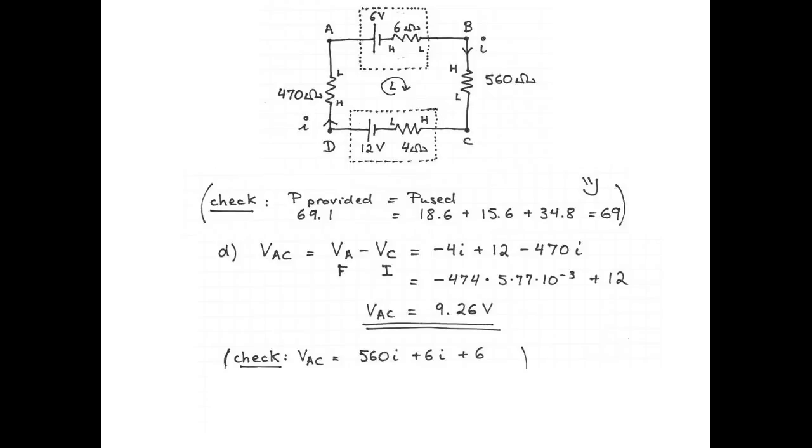Let's calculate the potential from C to A, but this time going through point B. Across the 560 ohm resistor, we go from low potential to high potential, so plus 560i, and then plus 6i across the internal resistance of the 6 volt battery, and plus 6 across the EMF of the 6 volt battery. 566 ohms multiplied by 5.77 milliampere plus 6 volts is 9.26 volts. Awesome!